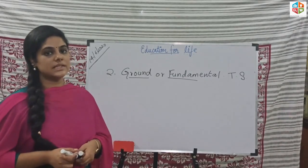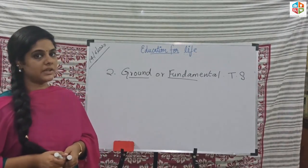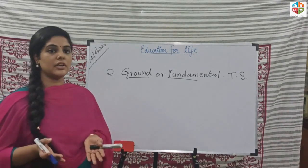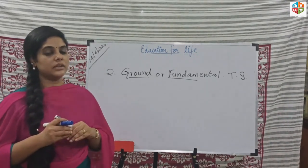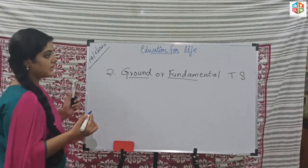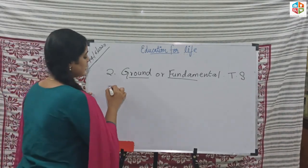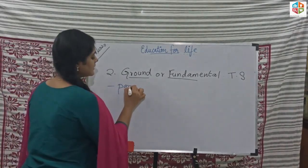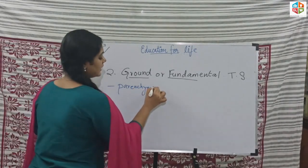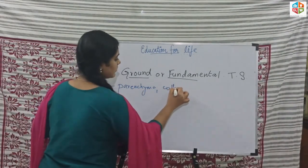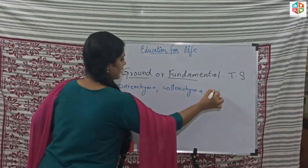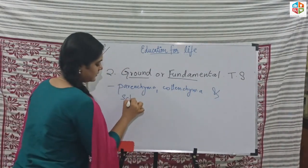The second type of tissue system is the ground or fundamental tissue system. This is the majority of the tissue found in the plant. The cells present in the fundamental tissue system include parenchyma cells, collenchyma cells, and sclerenchyma cells.